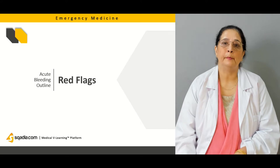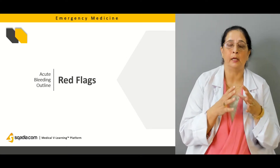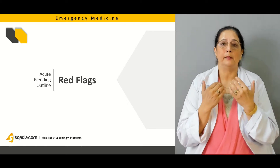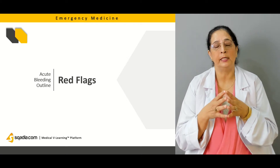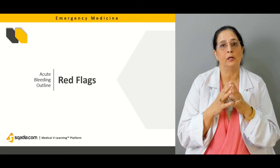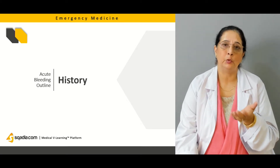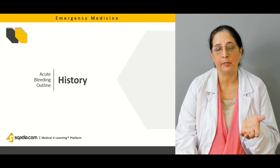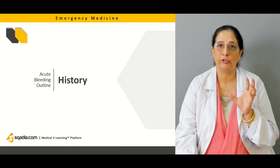Then we will also talk about some red flags — what are the warning signs which we need to pay attention to that a patient might develop acute bleeding. Usually patients with any previous histories of bleeding, patients who are taking some drugs that can cause acute bleeding, or any congenital abnormalities like hemophilia — all these red flags we will talk about in detail. Then we will talk about some important questions we need to ask the patient in the history, whether they have had this problem before, what were the circumstances in which the bleeding occurred, and whether they are taking some medications that might be associated with the acute bleeding.